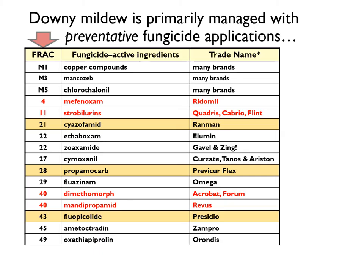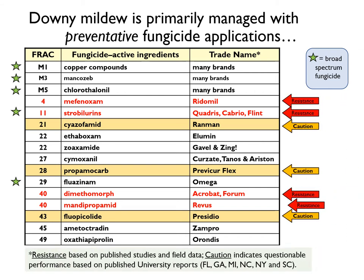Fortunately, there are a number of fungicides available to manage downy mildew. These fungicides have diverse modes of action as indicated by the different FRAC codes. However, only those fungicides noted with a star are broad spectrum. All the other fungicides are specific to oomycete pathogens and are not effective against other classes of pathogens, emphasizing the need for proper disease diagnosis. Repeated fungicide usage also leads to the development of resistance in our pathogen population, which constantly undermines chemical control of downy mildew.